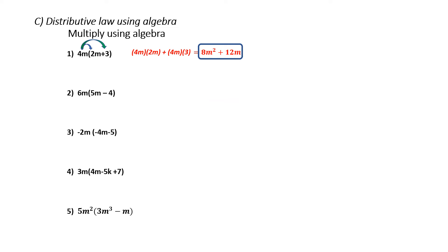Why don't you try problems 2, 3, 4, and 5, and I will do it in a minute. Stop the recording now. Okay, so let's do number 2: 6m times 5m. 6 times 5 is 30, m times m is m squared. 6m times negative 4: 6 times negative 4 is negative 24, and there's an m left. So my answer is 30m squared minus 24m. Final answer.